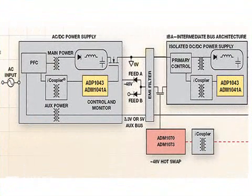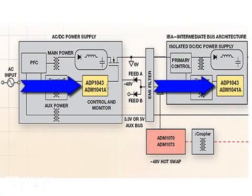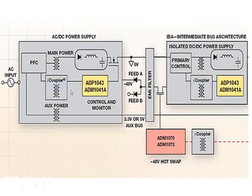Here's a zoomed-in picture from the AC wall plug on the left to the output of the intermediate bus voltage on the right. You can see where the ADP1043 sits in the power chain. You can also see that it matches well with other ADI products such as the iCoupler products, hot swaps, and sequencer devices.